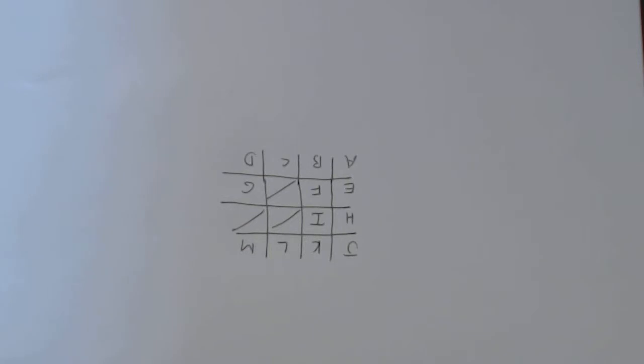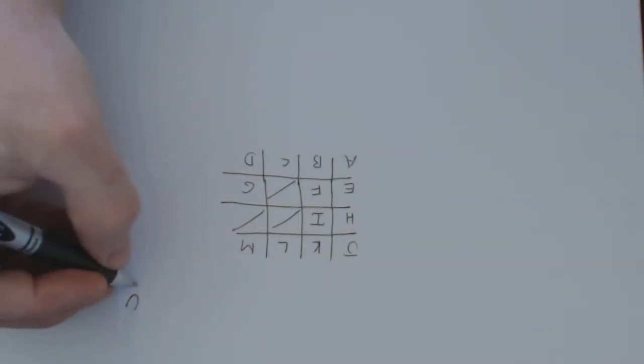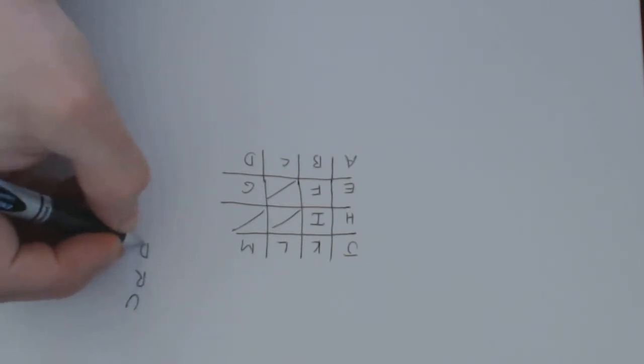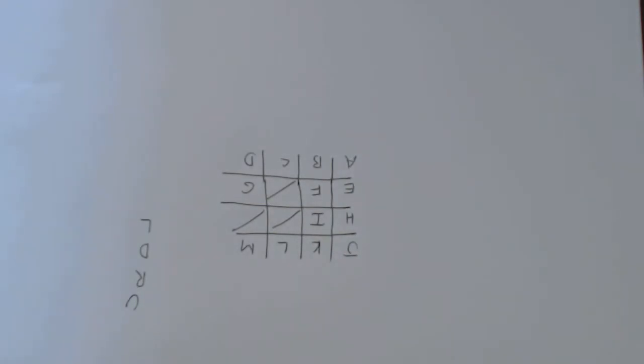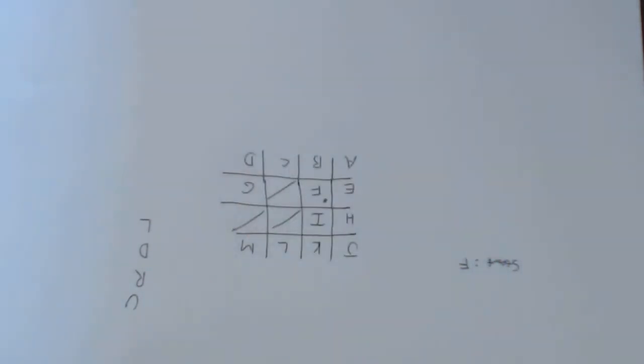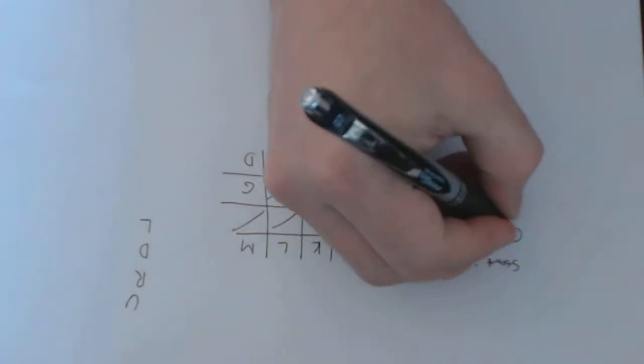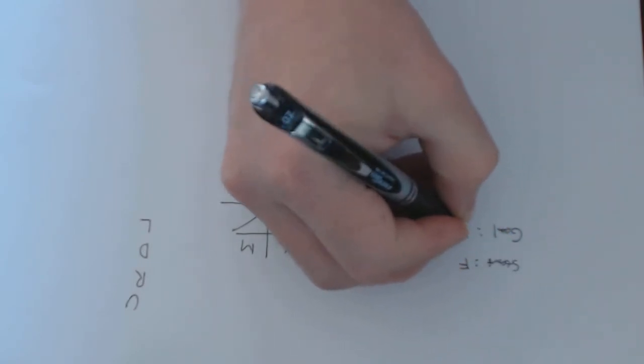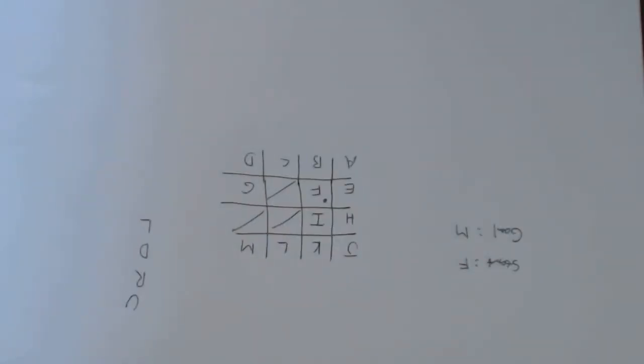It says assume the loops are detected and that you consider nodes in the order of up, right, down, left. You can't move diagonally. Also assume that the start node is F, so this is the start node. Start is F and the goal node is M. And that nodes expand in order that they were generated.